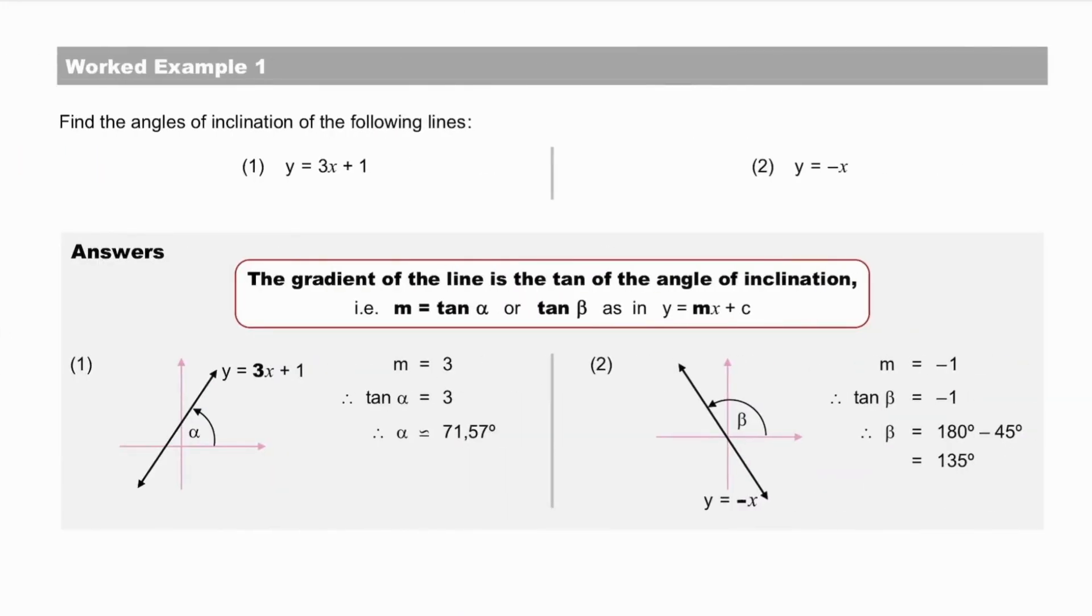Pause while checking your answers. Remember, the gradient of the line is the tan of the angle of inclination. So, a positive gradient results in an acute angle of inclination, and a negative gradient results in an obtuse angle of inclination.